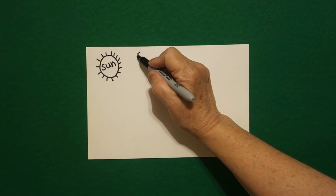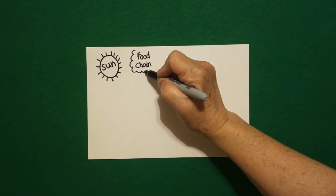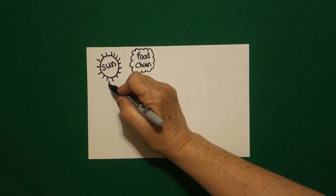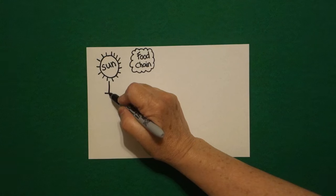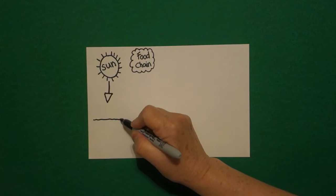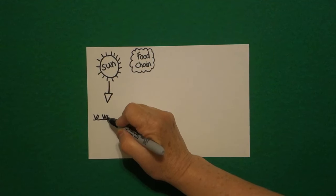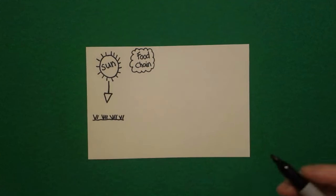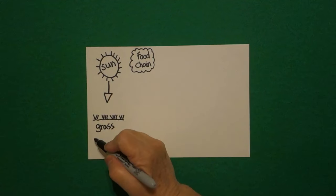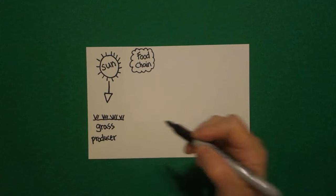Right next to that, I'm going to write 'food chain' so I don't forget what I'm drawing, and put a curve line, curve line, curve line, all the way around. Now from the sun, I'm going to draw a straight line and a triangle — straight line, straight line, straight line, connect. Underneath, I'm just going to draw a slightly wavy line, come back up to the top and draw little straight lines back and forth, because this is grass. Grass is the beginning producer for our food chain.